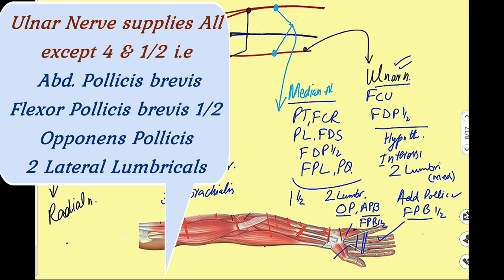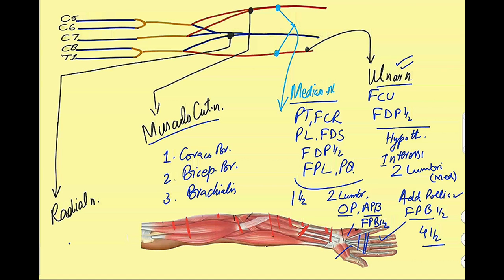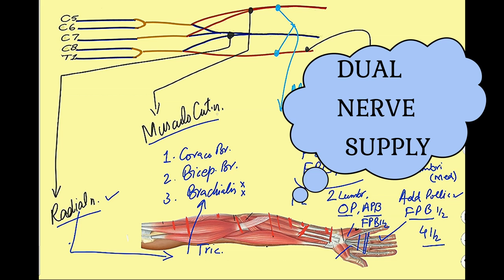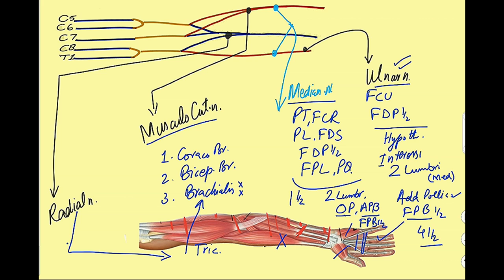All muscles of the hand are supplied by the ulnar nerve except four and a half. Over the back of the arm, the triceps muscle is supplied by the radial nerve, which also supplies the brachialis muscle — so brachialis has a dual nerve supply from both the radial and musculocutaneous nerves. The posterior compartment of the forearm has superficial and deep groups: the superficial group is supplied by the radial nerve itself, while the deep group is supplied by the deep branch of the radial nerve.